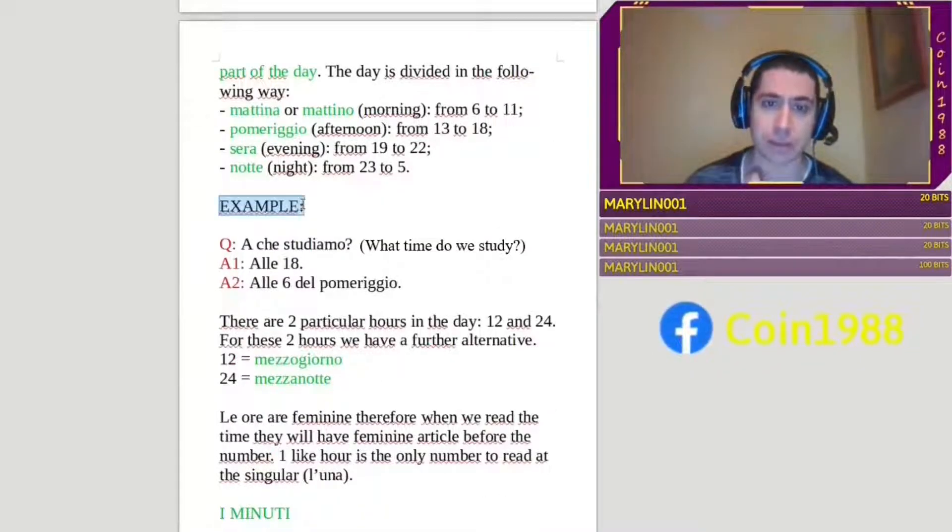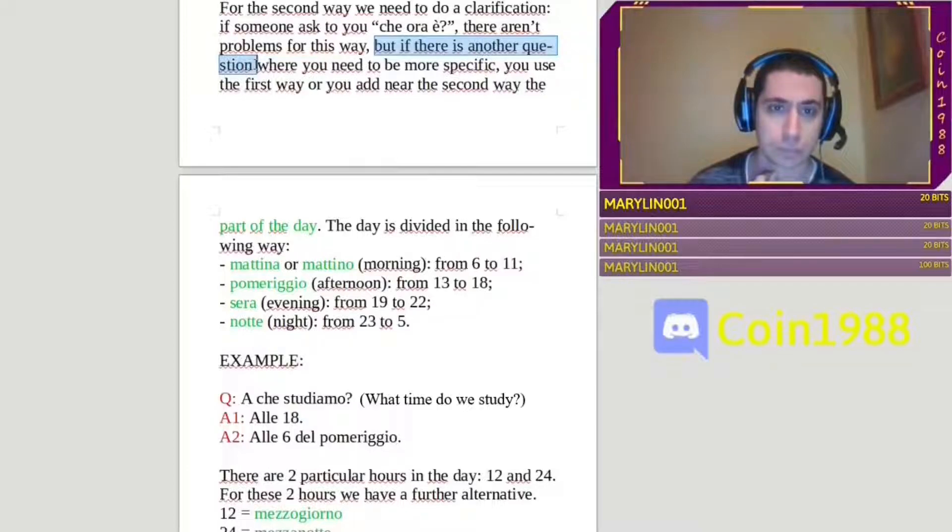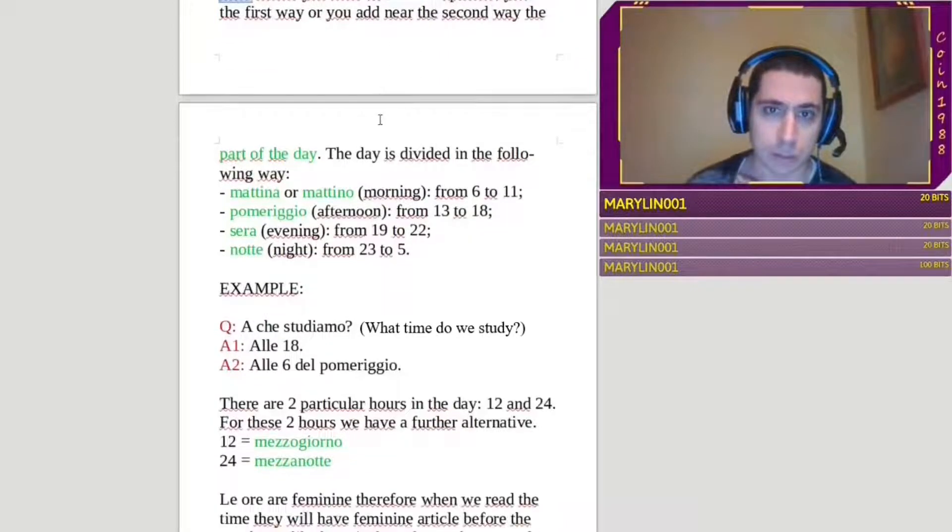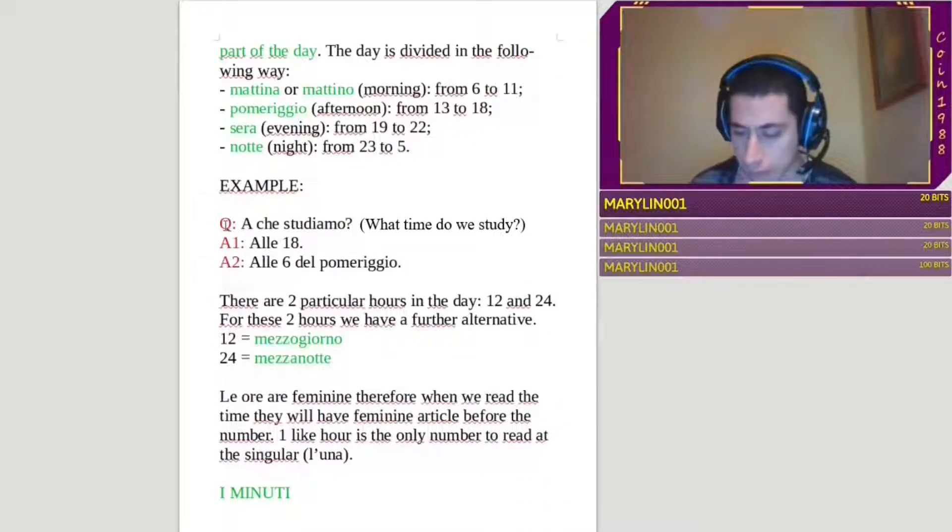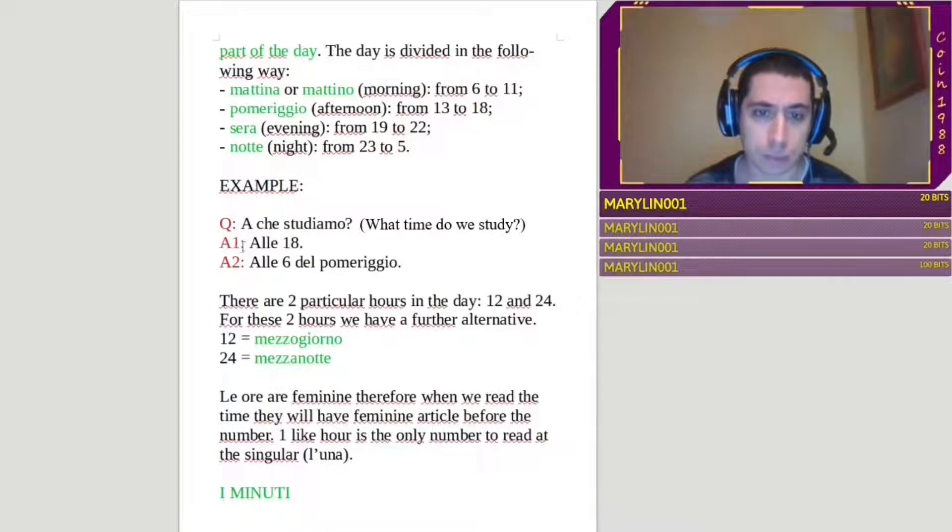Example. This is an example if there is another question. Because with the time, you don't ask only what time is it, but you can ask something else. So, the example is, a che ora studiamo? That means, what time do we study? You can answer, alle diciotto, or you can answer, alle sei del pomeriggio, that is always diciotto. But you say in a different way.